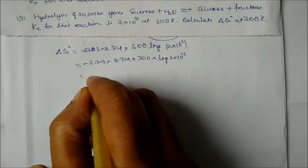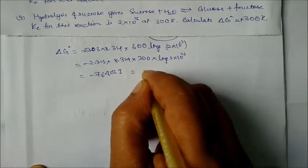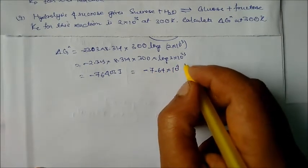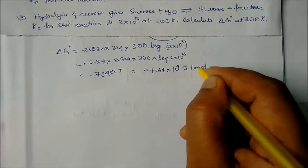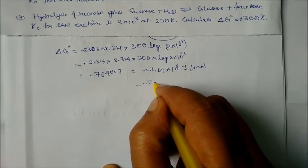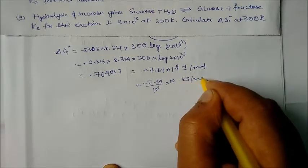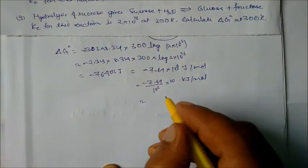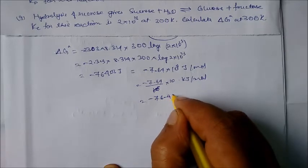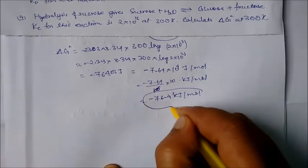Solving gives ΔG° = −76403 J/mol, which can be written as −7.64 × 10⁴ J/mol, or equivalently −76.4 kJ/mol. This is our final answer.